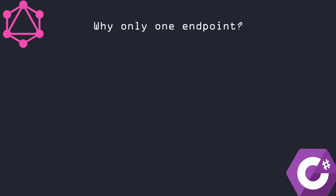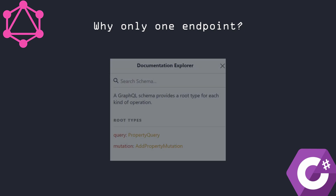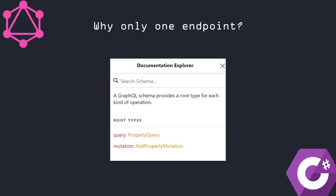The next question is: why only one endpoint? It's one of the advantages of GraphQL — we don't need to send requests to many different endpoints. The content of the request determines what operation you want to do. Besides that, if you are using GraphQL you will have all available queries nicely described inside the documentation tab.